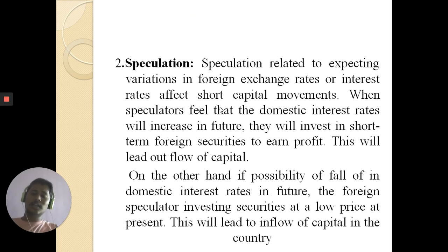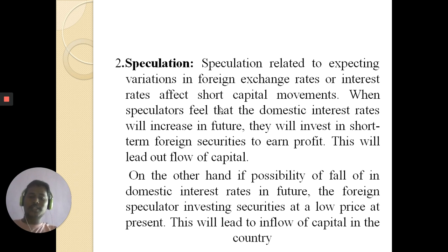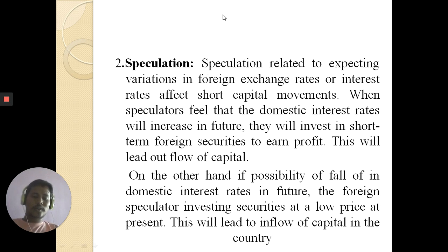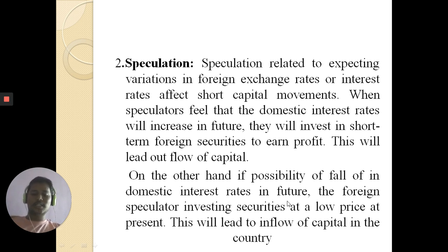The second factor influencing international capital movement is speculation. Speculation related to expected variations in foreign exchange rates or interest rates affects short-term capital movements. When speculators feel that domestic interest rates will increase in the future, they invest in short-term foreign securities to earn profit, leading to an outflow of capital. On the other hand, if domestic interest rates are expected to fall, foreign speculators buy securities at low prices, leading to an inflow of capital.